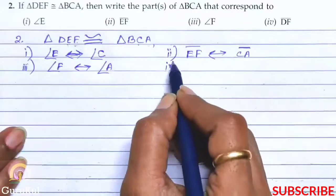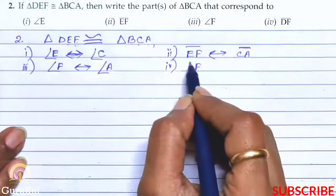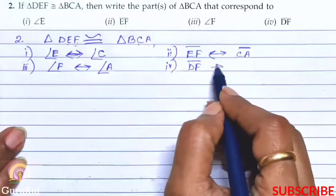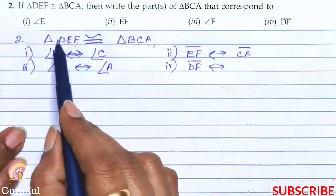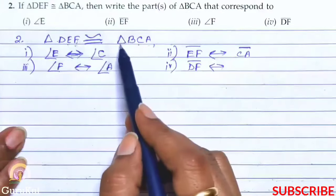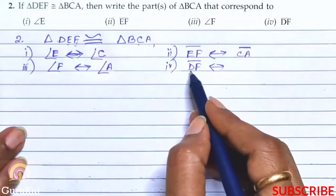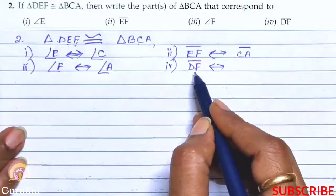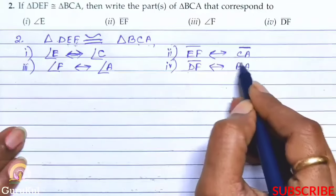Now the fourth one, it says the arm or the line DF, DF corresponds to what. Now here DF, look, first and third. So in triangle BCA, first and third is BA. So arm DF or line DF corresponds to line BA.